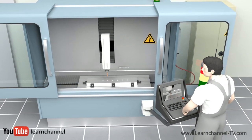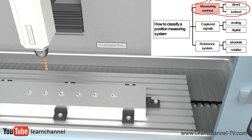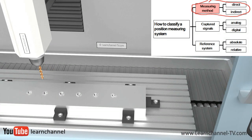In this animation, we discuss indirect and direct measuring systems using the example of a CNC milling machine.